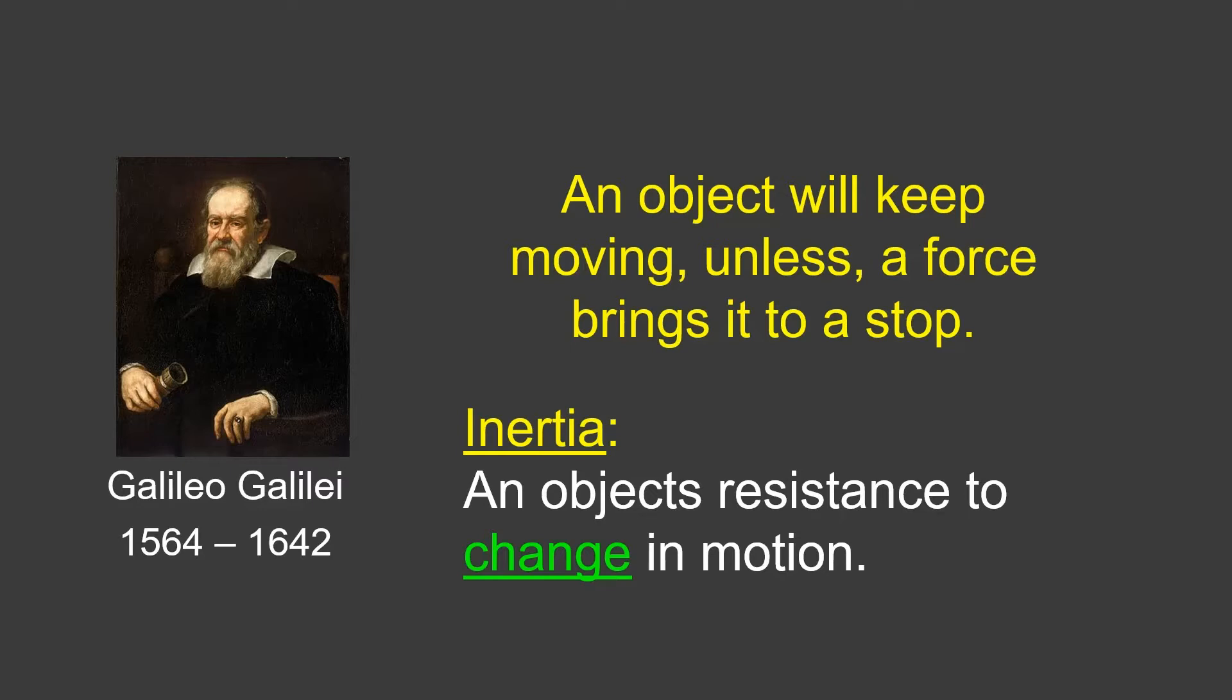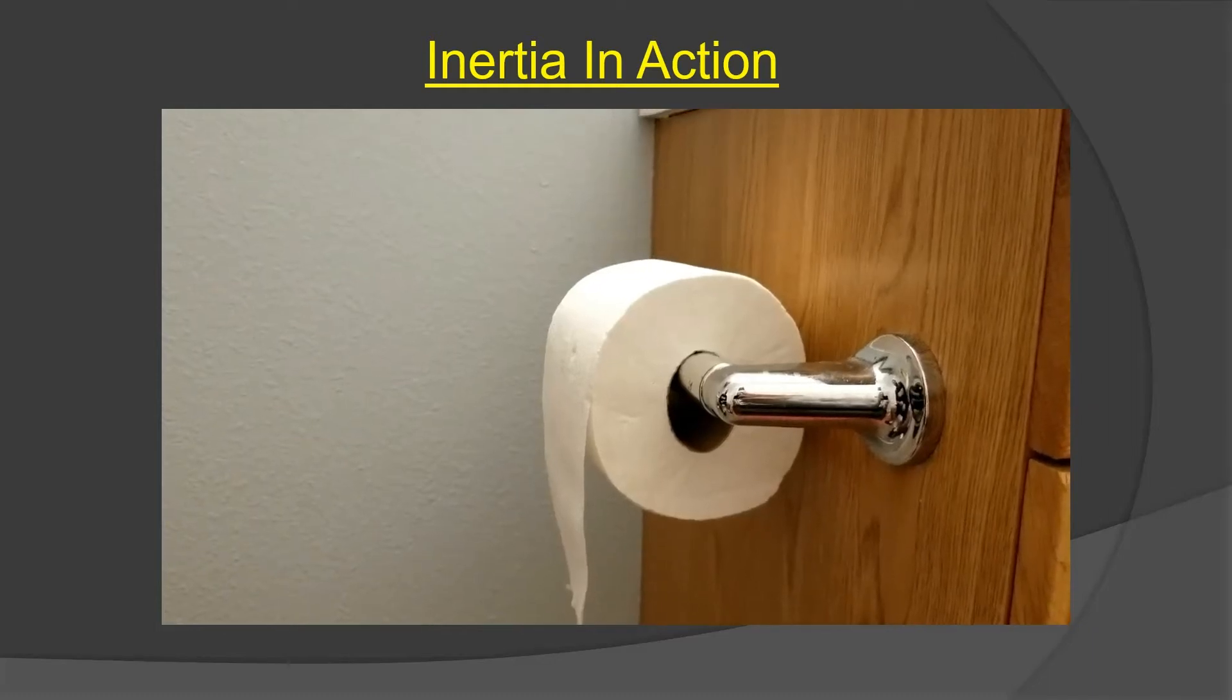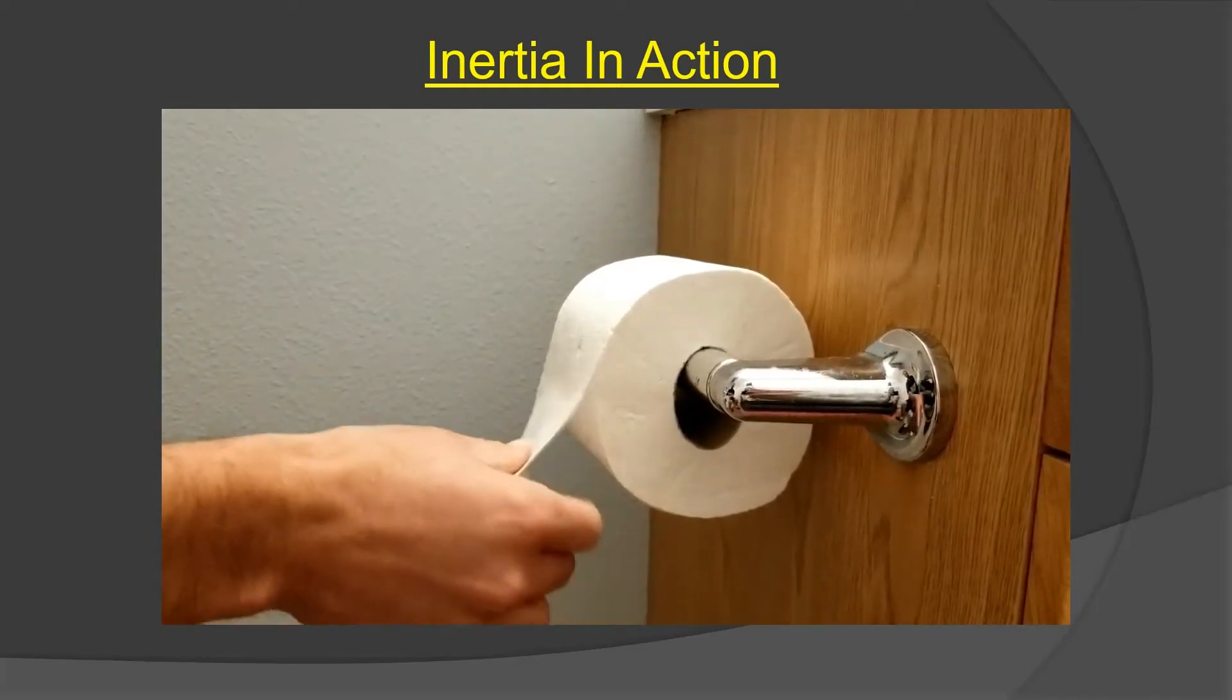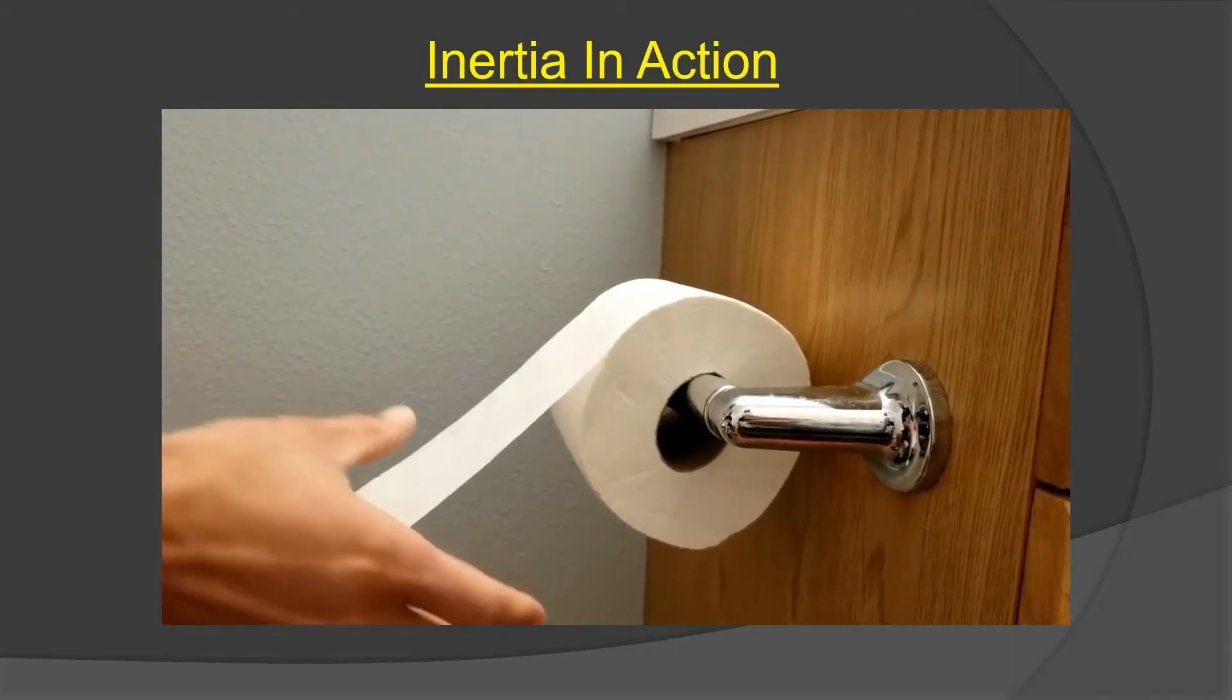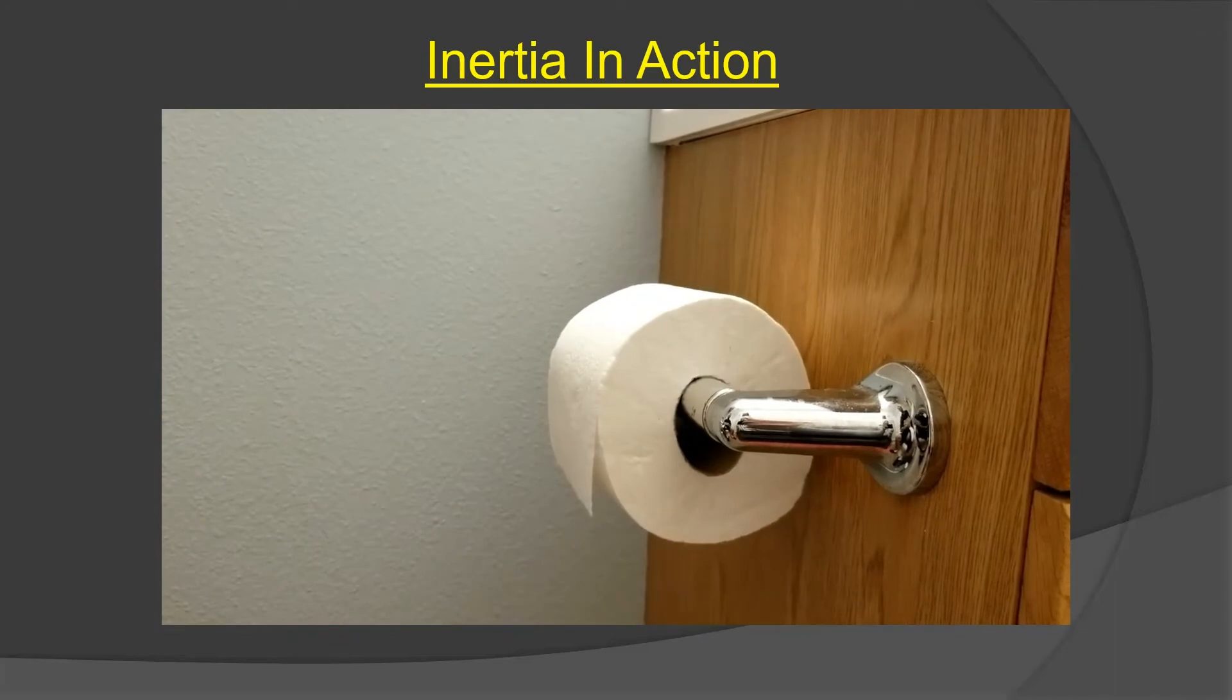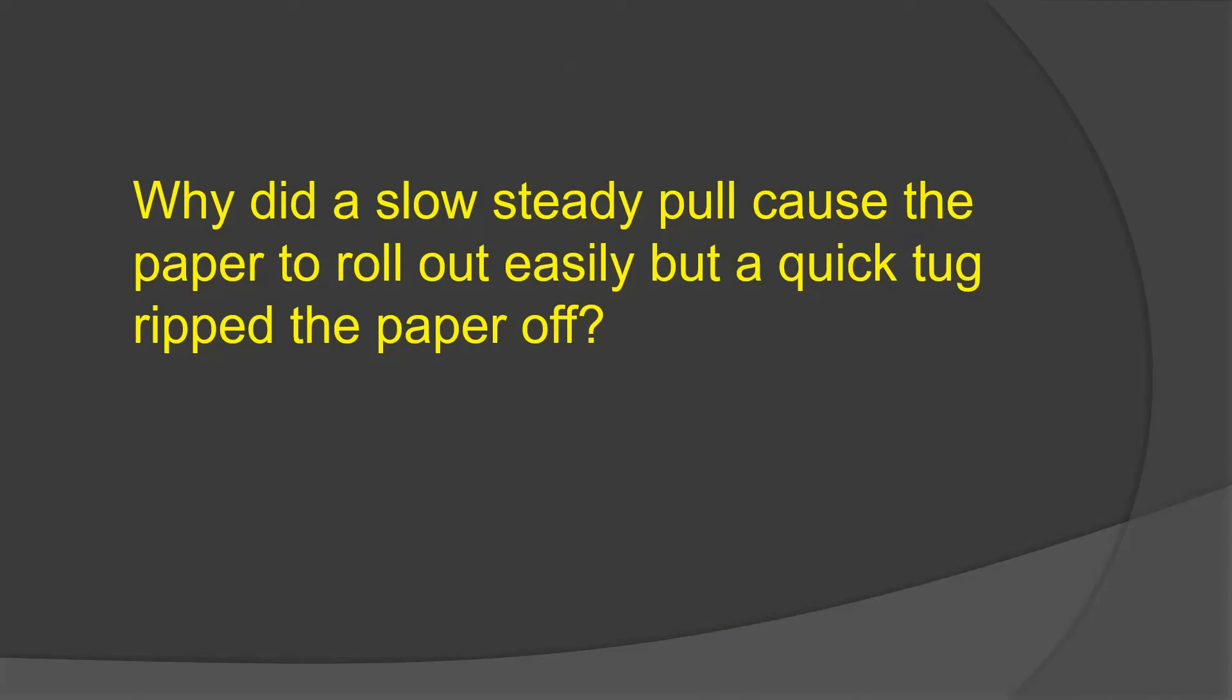So here's an application today. It's something we've all done. But have you ever asked yourself the question, why did the slow steady pull cause the paper to roll out easily but a quick tug ripped the paper off?